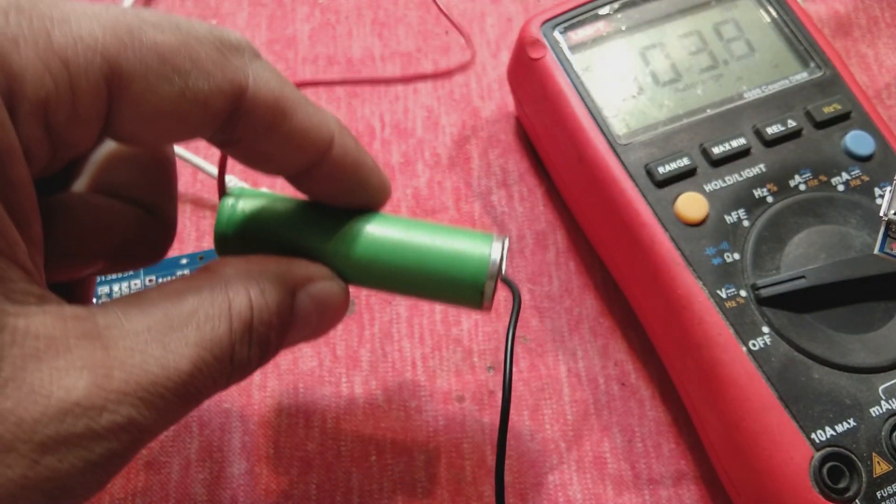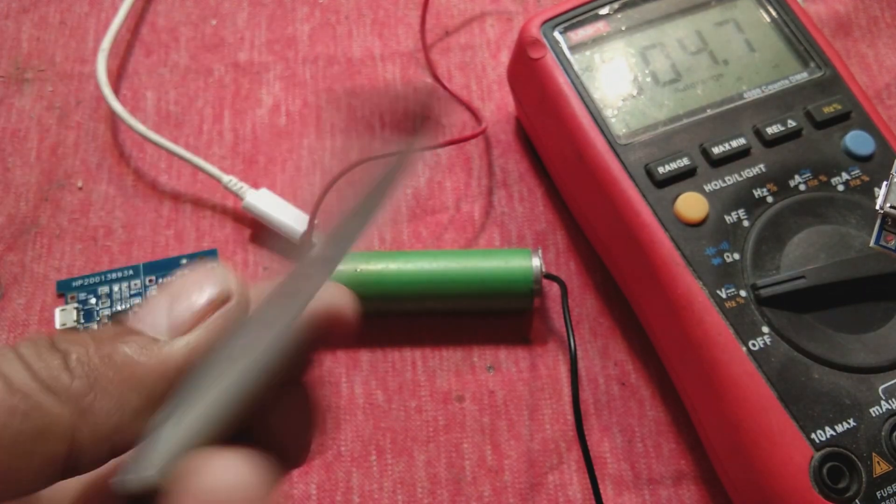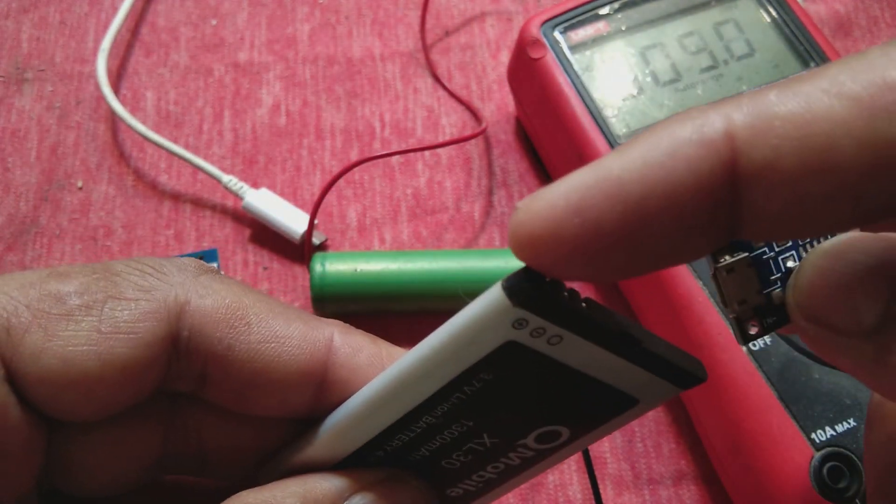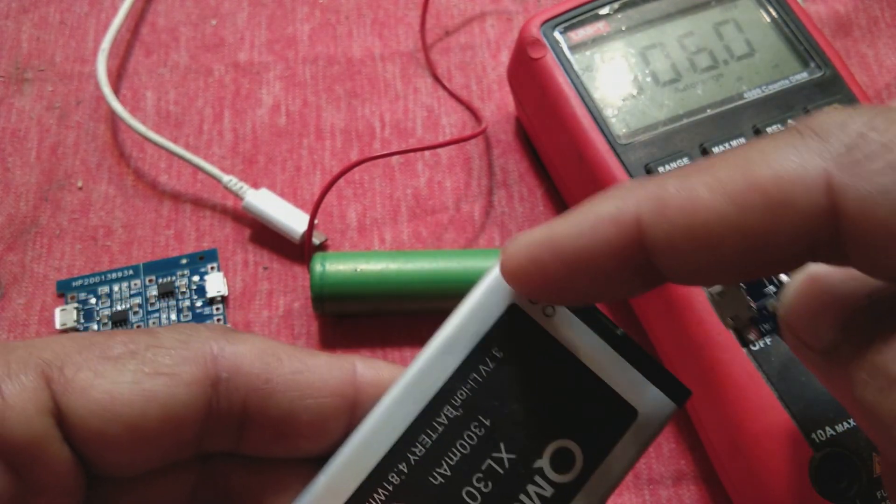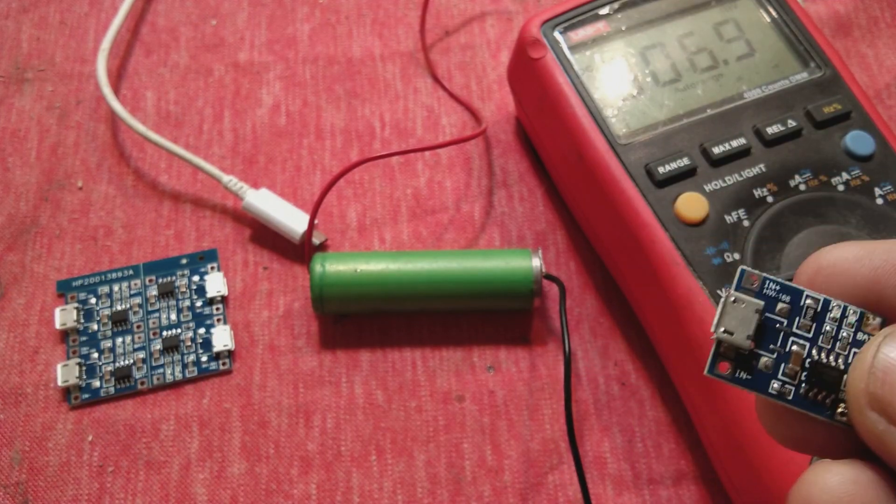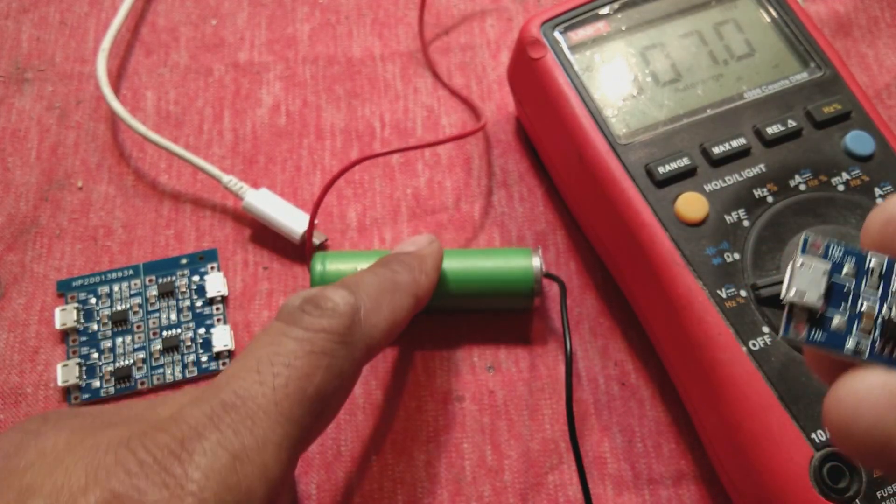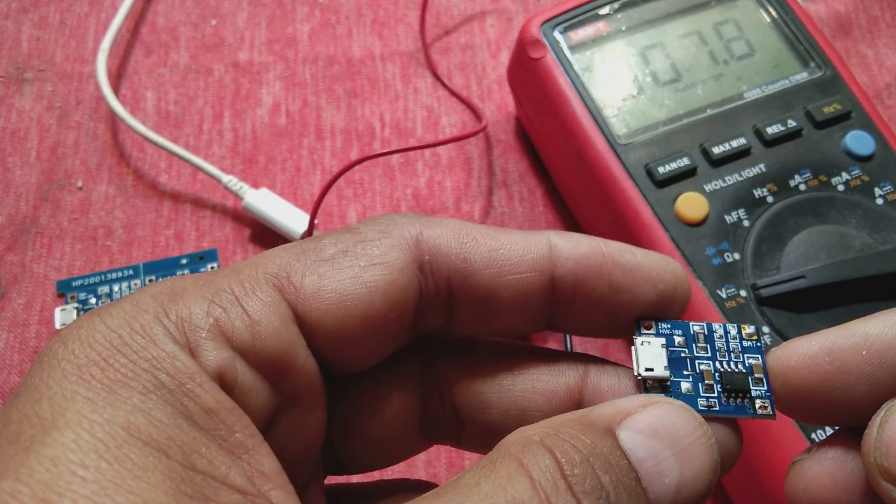But if some battery has no charging circuit and only has terminals exposed, then you can use this circuit to control the charging rate. This charger will control the charging rate at 1 ampere maximum.